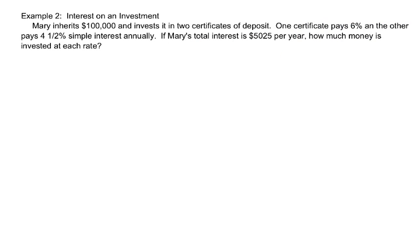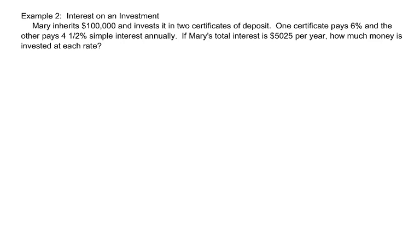Just as a forewarning on this next example, the problem is not going to be as easy as just plugging into that equation I just gave you for simple interest, because this is the Pre-Calc Honors class. So let's talk about interest on an investment. Mary inherits $100,000 and invests it in two certificates of deposit. One certificate pays 6%, and the other pays 4.5%, simple interest annually. If Mary's total interest is $5,025 per year, how much money is invested at each rate?